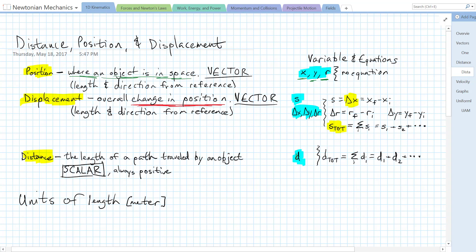The variable we use for distance is often lowercase d, and just like displacement, we can add up individual distances to get the total distance. All of these variables are measured in units of length or distance. The SI unit of length is the meter.